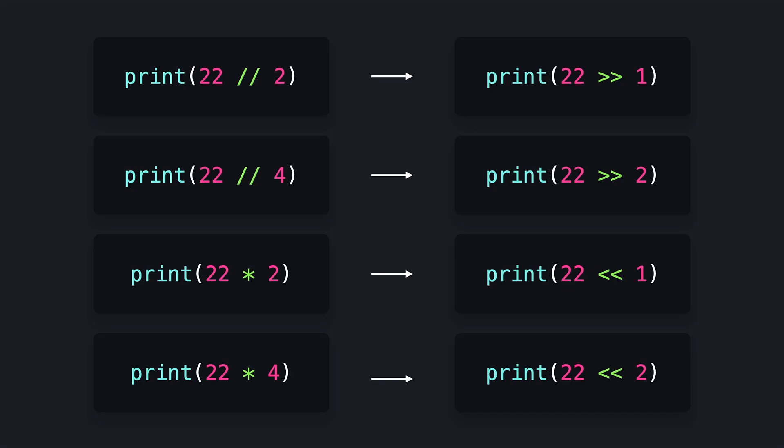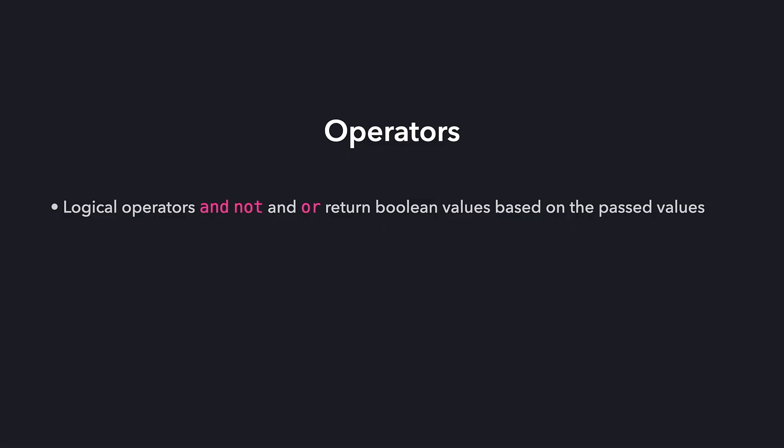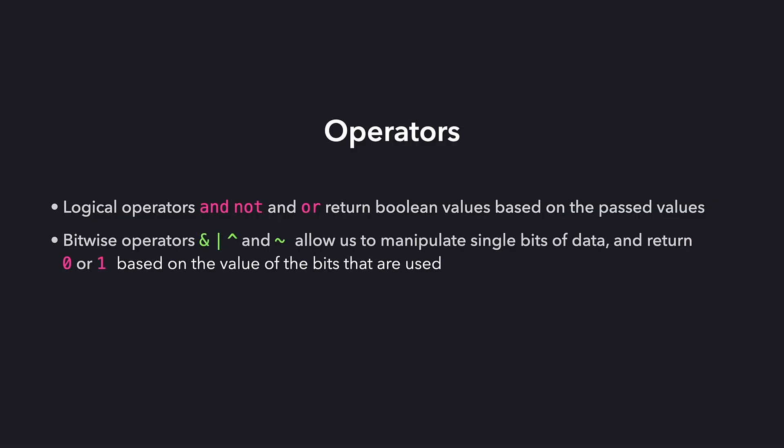Let's recap what we've learned about logical and bitwise operations. The AND, NOT, and OR operators return either false or true based on the values that we pass, and are very useful in IF statement conditions. The bitwise AND, OR, XOR, and NOT operators allow us to manipulate single bits of data, returning either 0 or 1 based on the bits passed. You cannot use them with floating point numbers. We can perform a binary right shift or left shift, which shifts the bits a certain amount to the right or left, returning the integer that corresponds to the new set of bits.